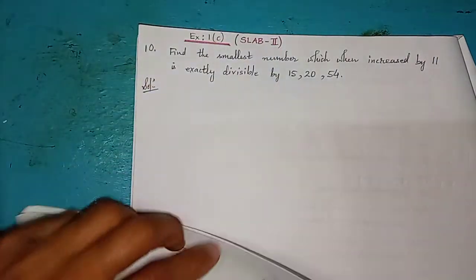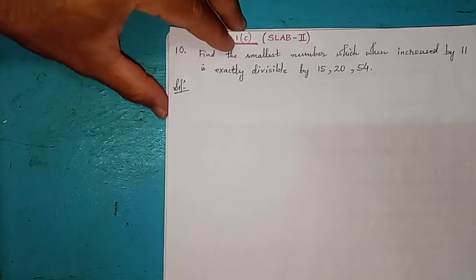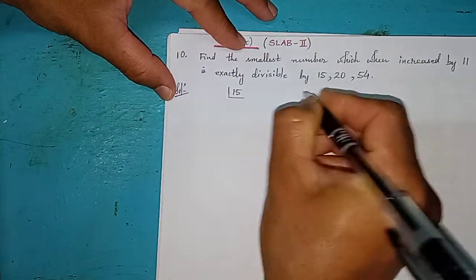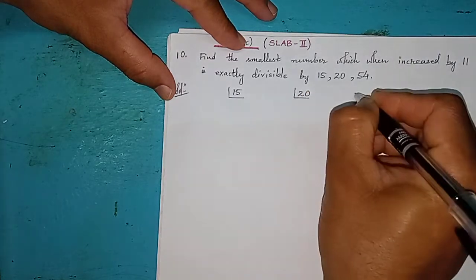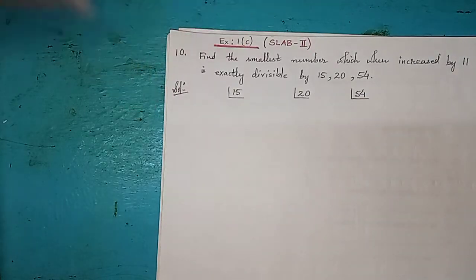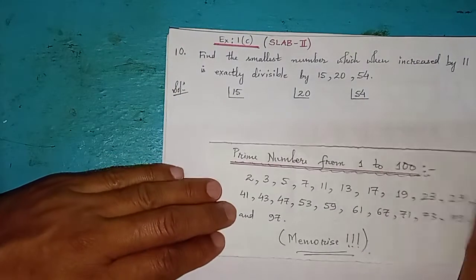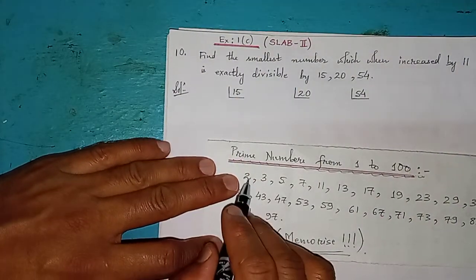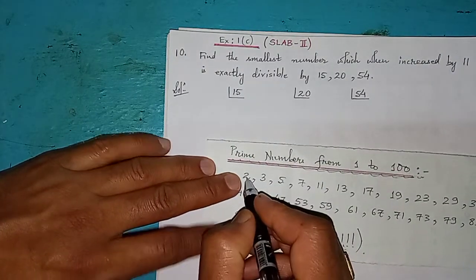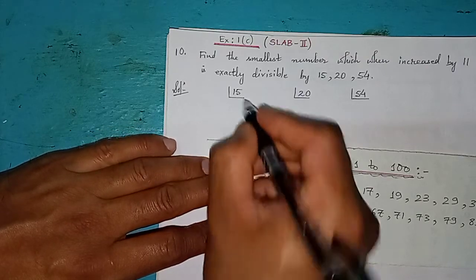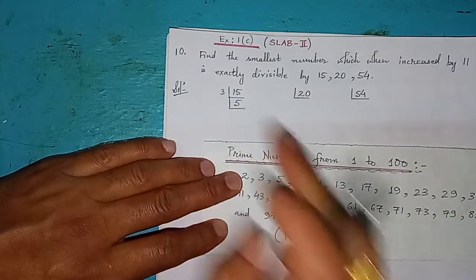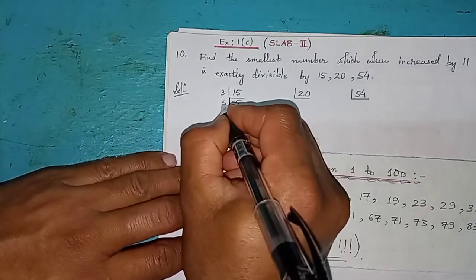Without wasting much time, let's find the LCM of 15, 20, and 54 by the prime factorization method. We start with the first prime number, 2. But 15 is an odd number and cannot be divided by 2, so we move to the next prime number, 3. Yes, 15 is a multiple of 3: 3 fives are 15. And 5 is itself a prime number.